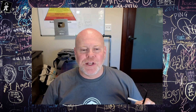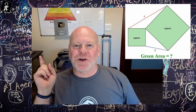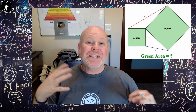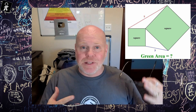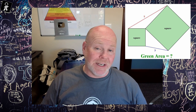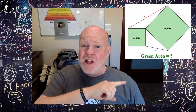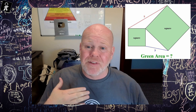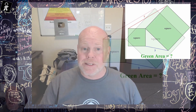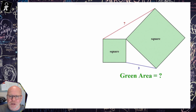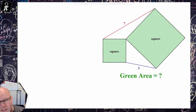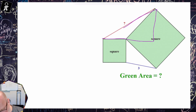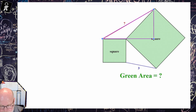In this video we are going to try and solve this problem. Basically we're trying to find the area of these two green squares given not a lot of information — just these two line lengths of seven and three units. As I'm looking at this problem, I'm already seeing a hope for a couple of Pythagorean theorem opportunities here.